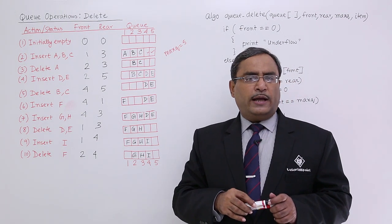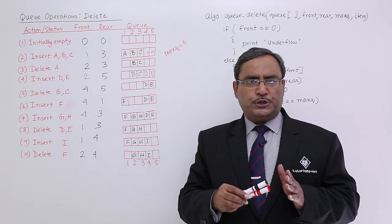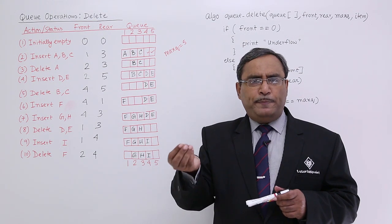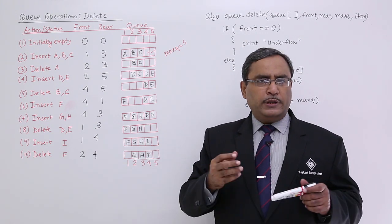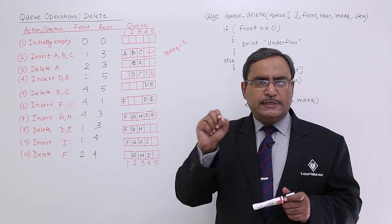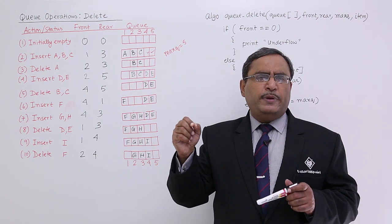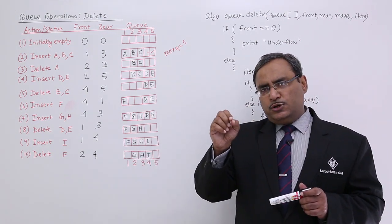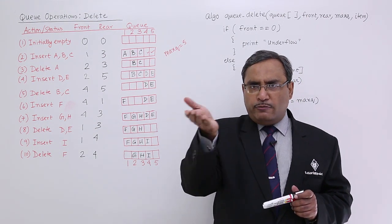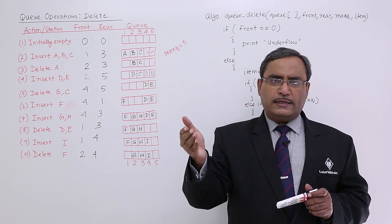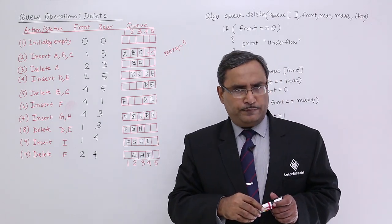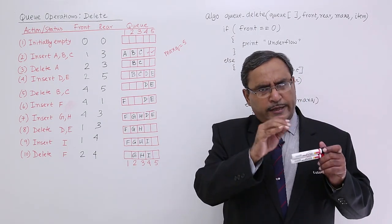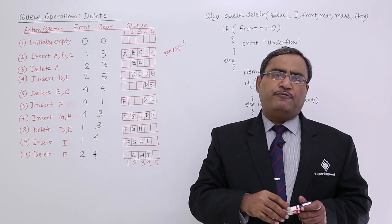We can have this deletion operation from the front end, so obviously the data will be picked up from the front. The code in that case: item is equal to queue[front] — let the array name be queue. So item is equal to queue[front] will retrieve the value from the front place into the item variable. After reading the value, I should update my front.